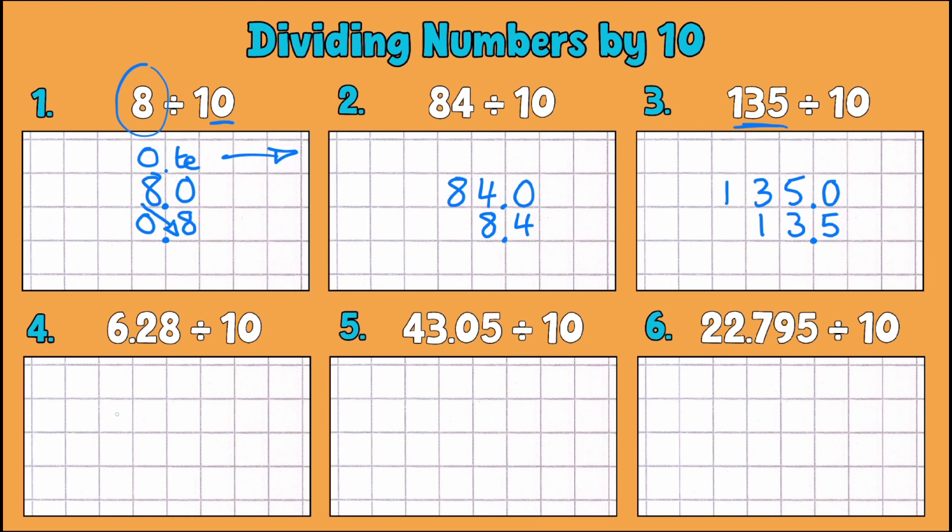Let's move on to number four then. So 6.28 and we're dividing that by 10. We've already got our decimal place in this number so should be a little easier. So everything still moves over one place. So our 6 becomes 6 tenths, our 2 tenths become 2 hundredths, and our 8 hundredths become 8 thousandths, and I can put my placeholder for my ones column in there for 0.628.